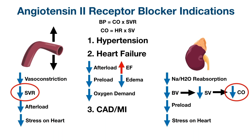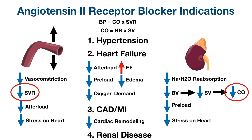Chronic hypertension, heart failure, and CAD or recent MI can all cause cardiac remodeling — changes in the size and shape of the heart that decrease its pumping function. Angiotensin 2 receptor blockers can help reduce cardiac remodeling by decreasing afterload, preload, and overall stress on the heart. ARBs can also reduce the progression of renal disease from chronic diabetes or hypertension — known as diabetic nephropathy and hypertensive nephropathy — by inhibiting the renin-angiotensin-aldosterone system to protect the kidneys.